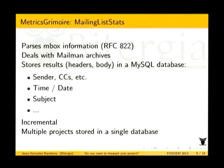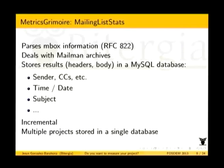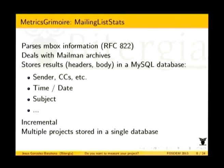The third tool is ML Stats, or Mailing List Stats. It's for dealing with mailing lists — parsing mbox archives or Mailman archives online. It puts all the results into a database, nicely organized in tables, with the usual email fields like sender, CC, time, subject, content, and so on. It's incremental, so you can run it today and get everything since yesterday. Multiple projects can be stored in a single database. The same applies to CVSAnaly and Bicho — both can analyze several trackers or repositories in the same database, allowing cross queries.